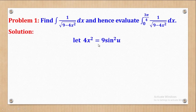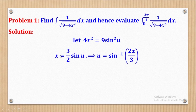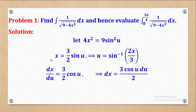We shall start by letting 4x² = 9 sin²(u). After taking the square root, we get x = (3/2) sin(u). Making u the subject gives u = arcsin(2x/3). When we differentiate x with respect to u, we get dx/du = (3/2) cos(u), so dx = (3/2) cos(u) du.